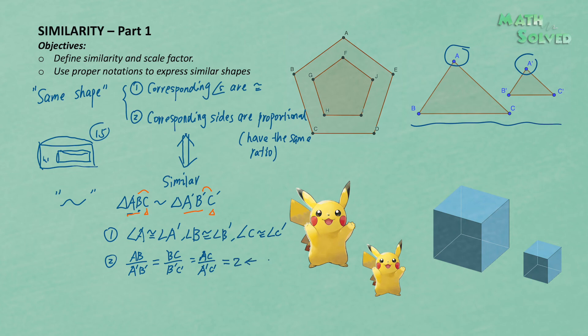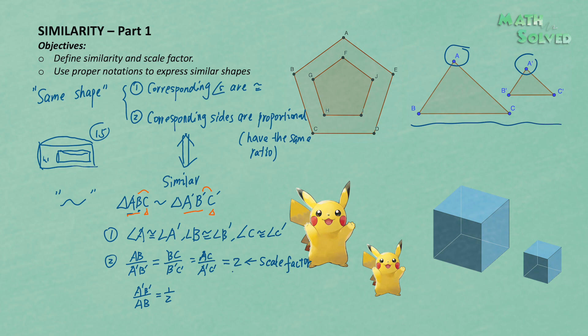We call this number the scale factor. By definition, the scale factor is the ratio of the corresponding sides. You could also write A prime B prime over AB, which would give one half — so you can also say one half is the scale factor. To understand the meaning: if you enlarge triangle A prime B prime C prime by a scale factor of two, you get the same shape as triangle ABC. Conversely, if you shrink triangle ABC by a scale factor of one half, you get the same shape as triangle A prime B prime C prime.